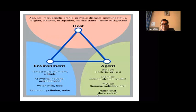This chart illustrates the epidemiological triad. The host factors include sex, race, genetic profile, previous disease, immune status, religion, customs, occupation, and family background. The environment includes temperature, humidity, altitude, crowding, housing, water, food, radiation, pollution, and noise. The agent includes biological factors — bacteria, viruses — as well as chemical, physical, and nutritional agents.